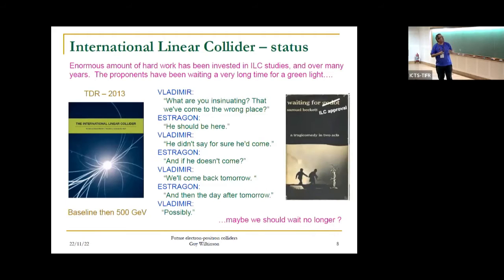A huge amount of work has been invested in ILC studies over many years. The PDR dates back to 2013, quite some time ago. At that point, the baseline was 500 GeV. Since then, we have been waiting for approval. Particularly for the proponents, the situation is rather reminiscent of the two tramps in Beckett's play Waiting for Godot. They wait and wait and come back tomorrow and the day after. Perhaps we should wait no longer.